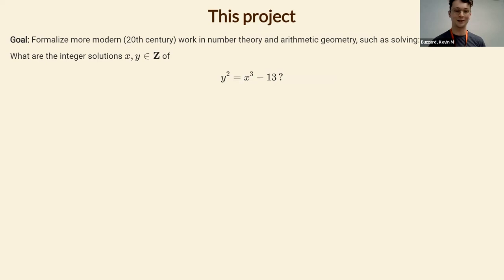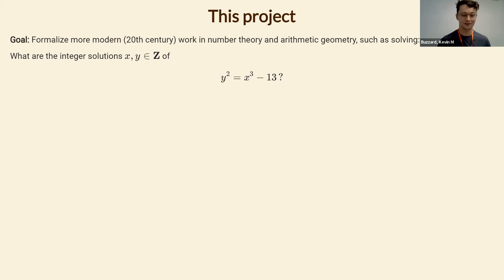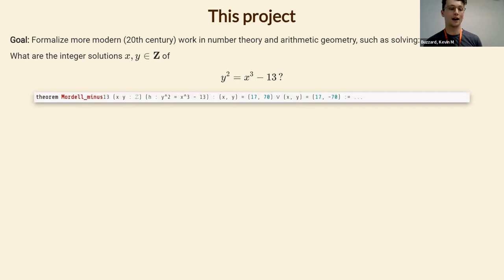The other animation was showing a solution to the equation: a square number equals a cube number minus 13. This maybe has no solutions, or maybe some solutions — in fact it has one. The solution is x equals 17 and y equals 70.